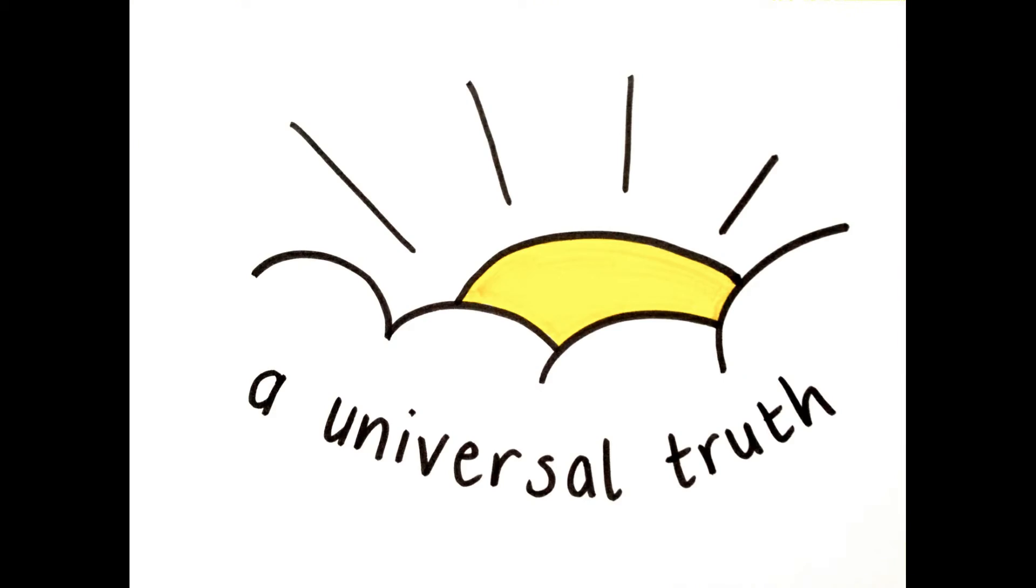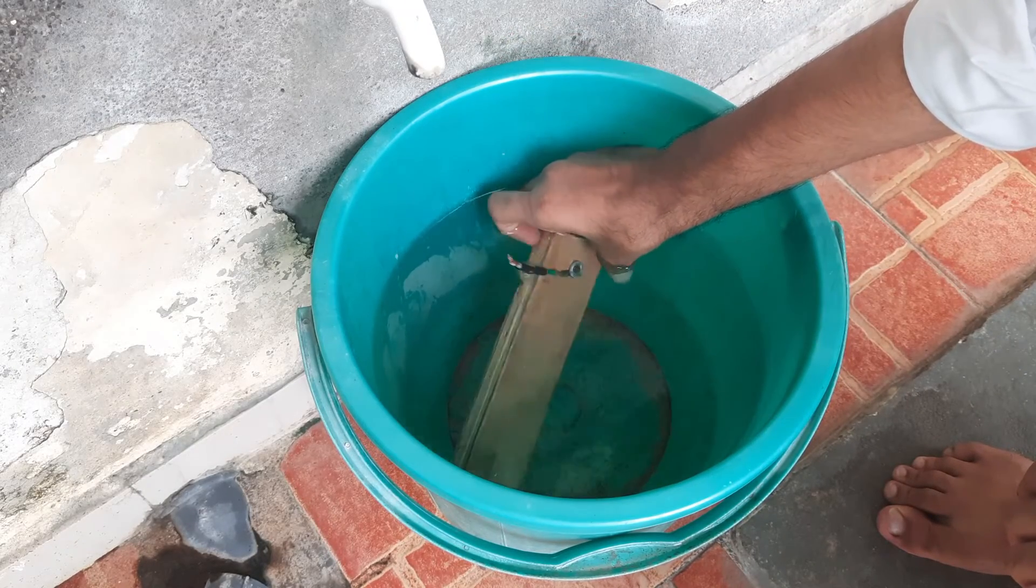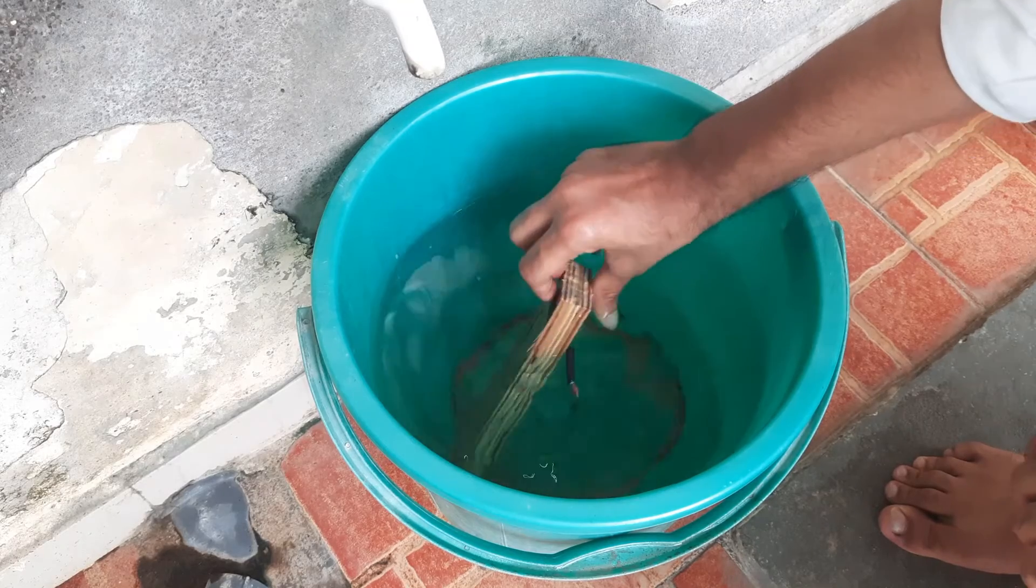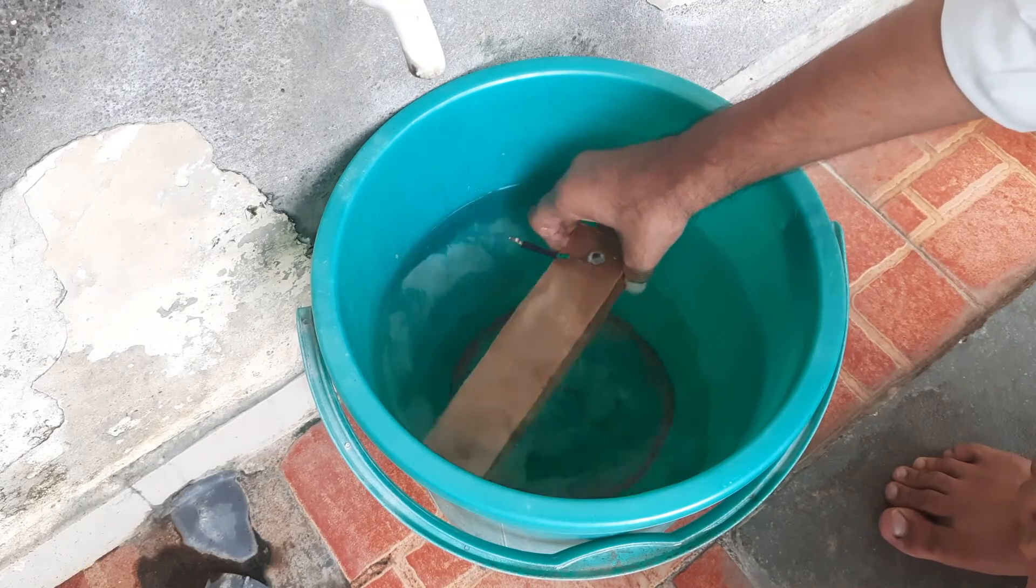And that's the universal fact. Now I will dip the wooden block into the bucket full of water and this water is tap water having TDS of more than 800 to 900 as the water with more TDS conducts more electricity.